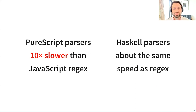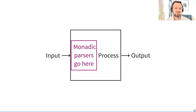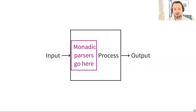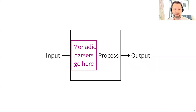Whenever your process receives a byte stream from the world beyond the process input boundary, the first thing you should do is parse that byte stream into a data structure. Monadic parsers are the easiest and most effective way to do that. Unless you already have a parsing library for the specific format of the byte stream, or you are under severe performance constraints, the first technique you should consider for parsing an input byte stream is monadic parsers.